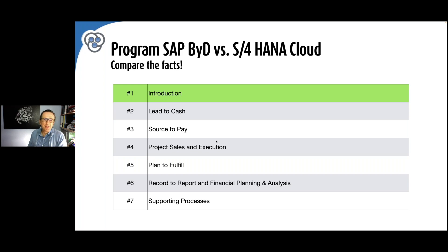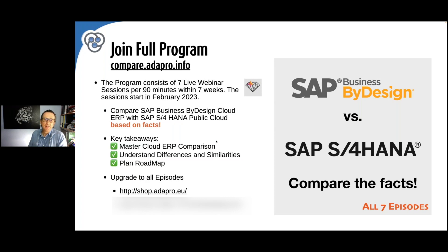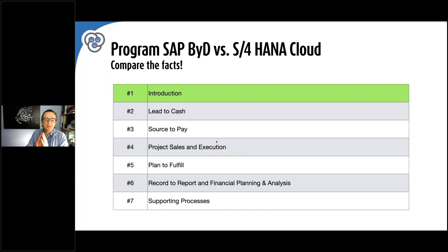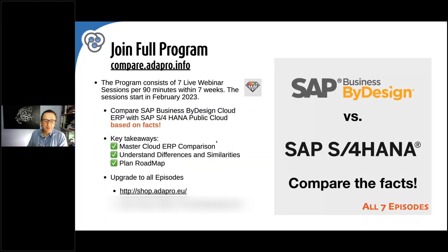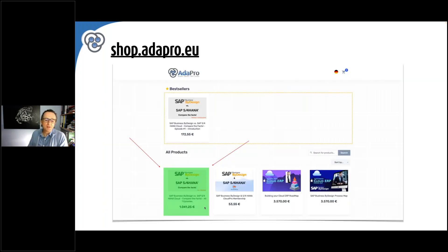This was the introduction. In the next weeks, we will cover details in each of the processes: lead to cash, source to pay, project sales and execution, plan to fulfill, record to report, and supporting processes. Think about joining the full program — it can be booked as one ticket, which is cheaper than booking each individual session. Go into the shop and find the SAP Business ByDesign vs S4HANA Cloud: Compare the Facts — all seven episodes.